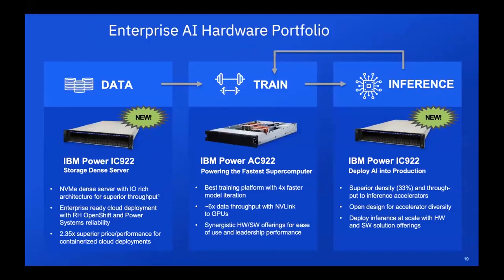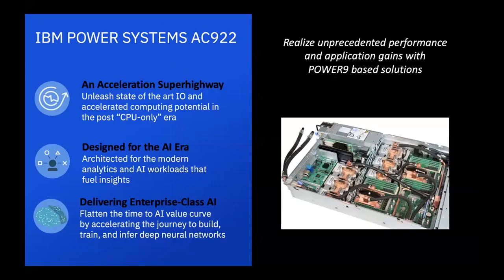IBM systems are built for the full AI workflow from data and data prep to training models to building inference applications. The AC922 provides up to six V100 GPUs, large pipes to the GPU through NVLink, and great memory bandwidth relative to state-of-the-art x86 systems.